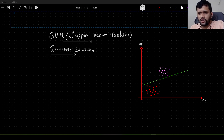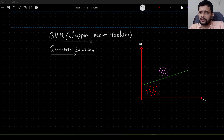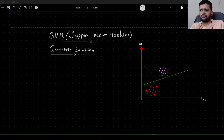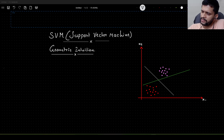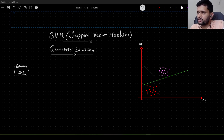Hello, guys. So, in this video I would like to give you a geometric intuition about what we mean by support vector machine and how support vector machine actually chooses the decision boundary or hyperplanes in order to classify the data points between two classes. So, in order to explain this, I will consider just a binary classification problem, and I am explaining the concept in two dimensional space.